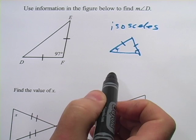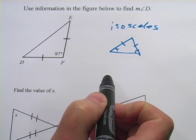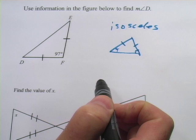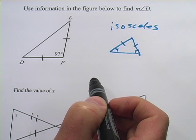And this angle up here, the one that's different, is called the vertex angle. So let's take a look at some problems that have to do with isosceles triangles.